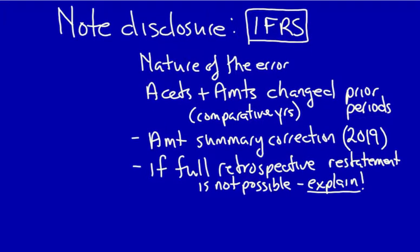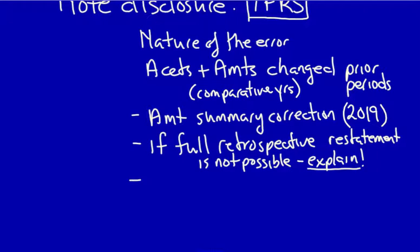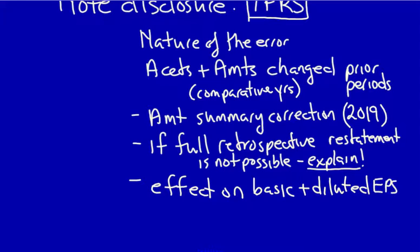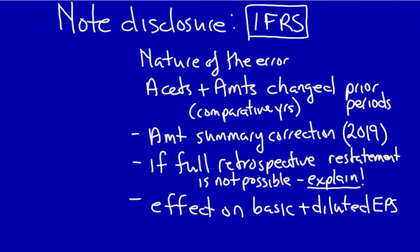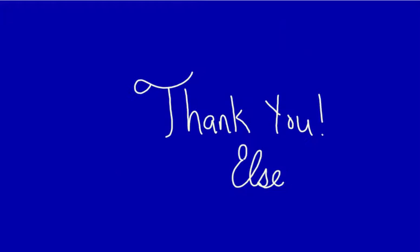The effect on both basic and diluted earnings per share must also be reported for each prior period presented. That's it for note disclosure. Keep in mind that if you're doing a summary change like the one we're doing right now, we would have to, at a minimum, show the total change to retained earnings, and because we're not changing any comparatives, we would have to do that too. Thank you very much for joining me. I hope this video was beneficial for your learning.